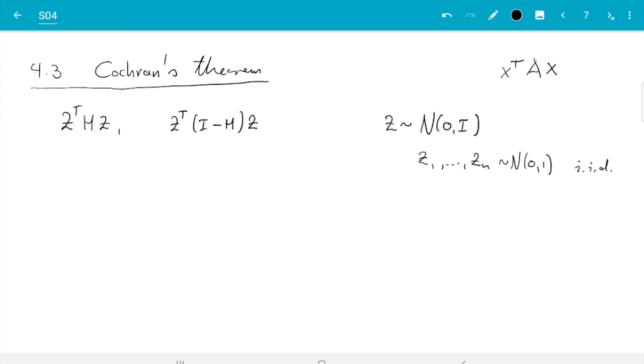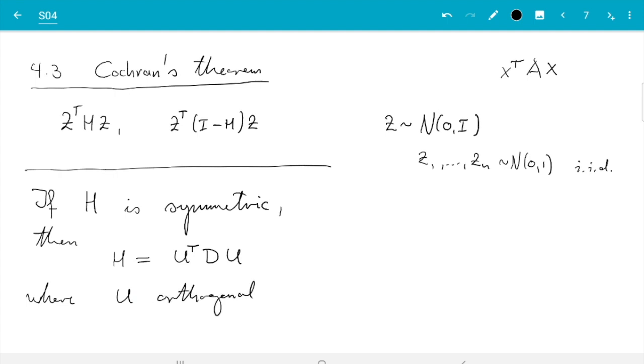Cochran's theorem asserts these two quantities are independent of each other and they are chi-squared distributed each. So first what we need is a result from linear algebra. That says if a matrix, I call it H already, is symmetric, then it can be diagonalized. And what that means is that we can write H as U transpose D U, where U is orthogonal and D is diagonal.